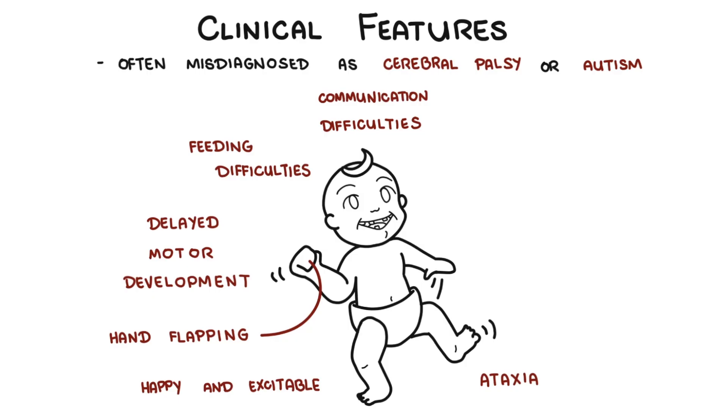Some other features include facial features, which include a prominent chin, deep-set eyes, abnormally wide mouth called macrostomia with a protruding tongue, widely spaced teeth, and an abnormally flat part of the skull, brachycephaly.